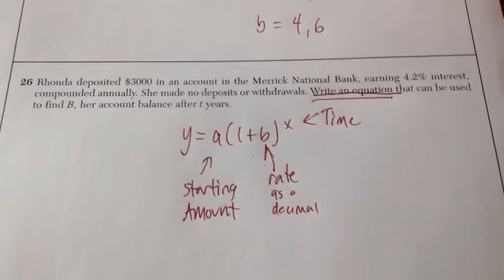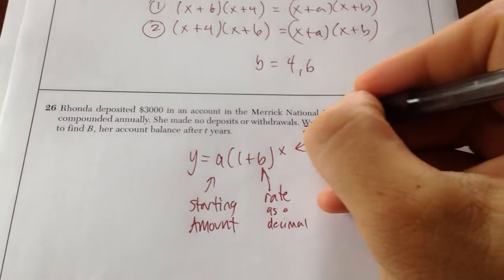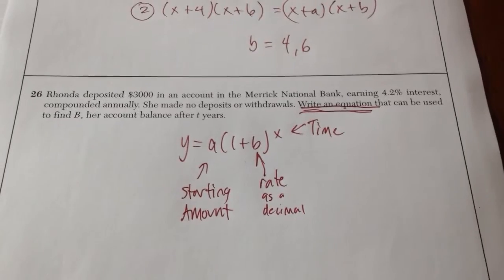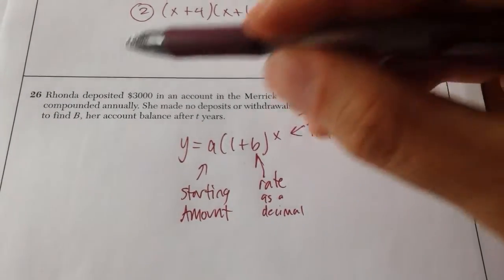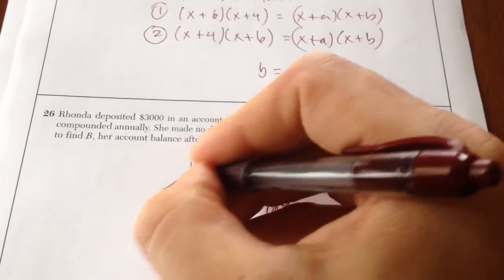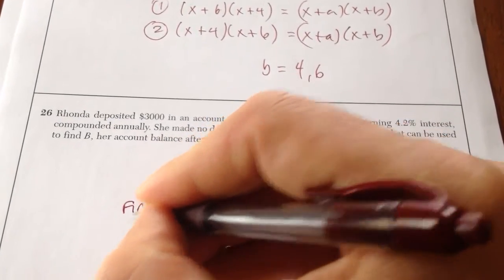So all they're asking you to do in this case is write an equation. Again, follow the directions. All I'm doing is writing an equation. I am not going to solve anything. So write an equation that can be used to find b, her account balance, after t years. This is basically your final amount.